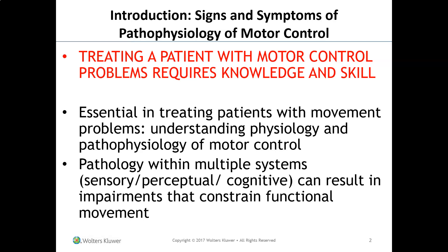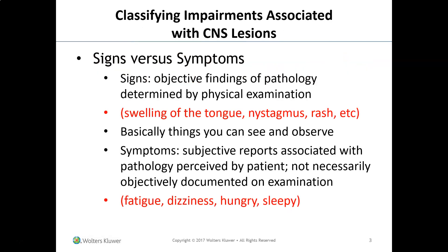Pathology within multiple systems — sensory, perceptual, cognitive — can result in impairments that constrain functional movement. Signs are objective findings of pathology determined by physical exam — things you can actually see. For example, you could see swelling of the tongue, nystagmus which is rapid eye movement, a rash, or limited range of motion. You can actually measure that and see it. That's a sign — things you can observe.